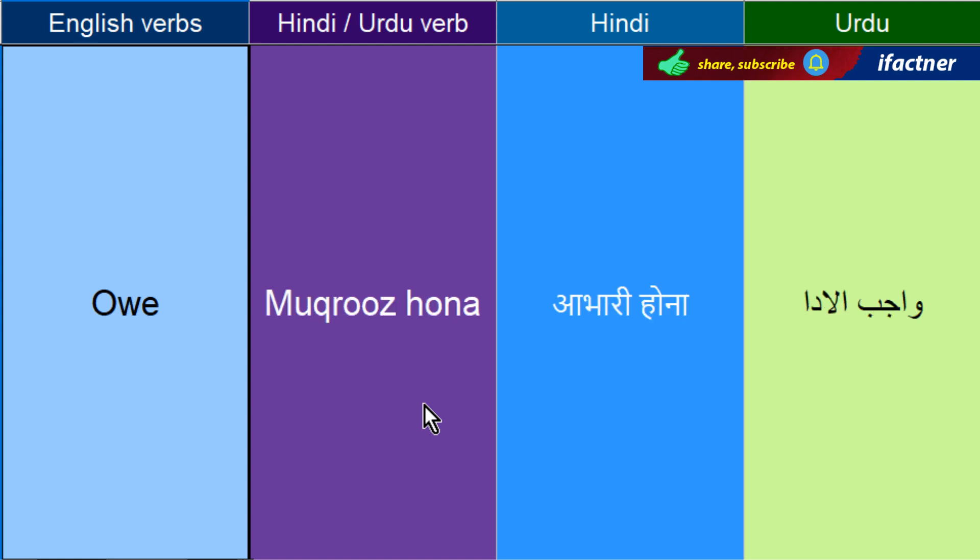Makrooz hona — Owe. I owe you hundred rupees — mainnay aap ko so rupay daynay hain, main aap ka so rupay ka makrooz hoon. Malik hona — Own. I own this car — main is gaari ka malik hoon.